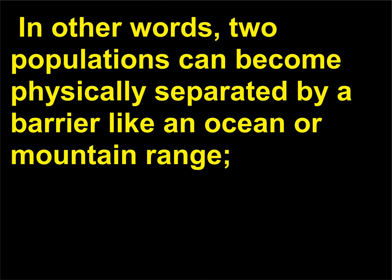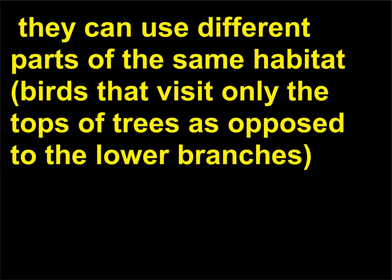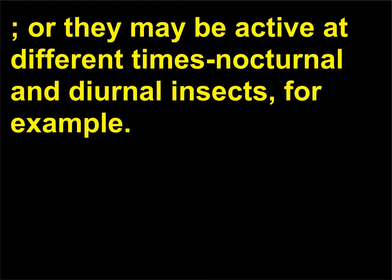In other words, two populations can become physically separated by a barrier like an ocean or mountain range. They can use different parts of the same habitat — birds that visit only the tops of trees as opposed to the lower branches. Or they may be active at different times, such as nocturnal and diurnal insects.